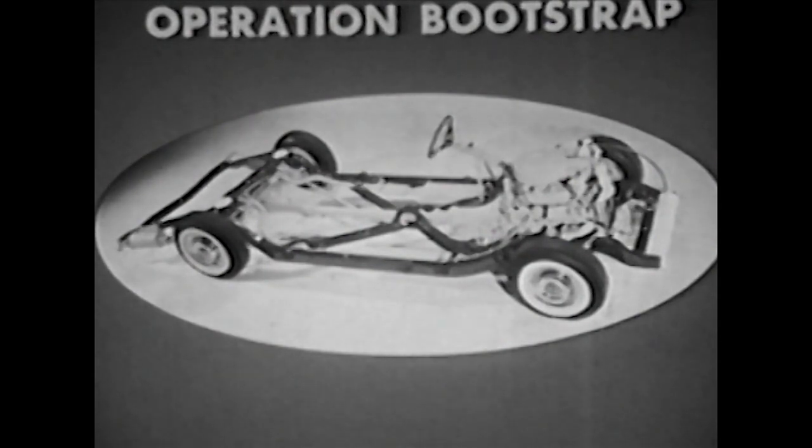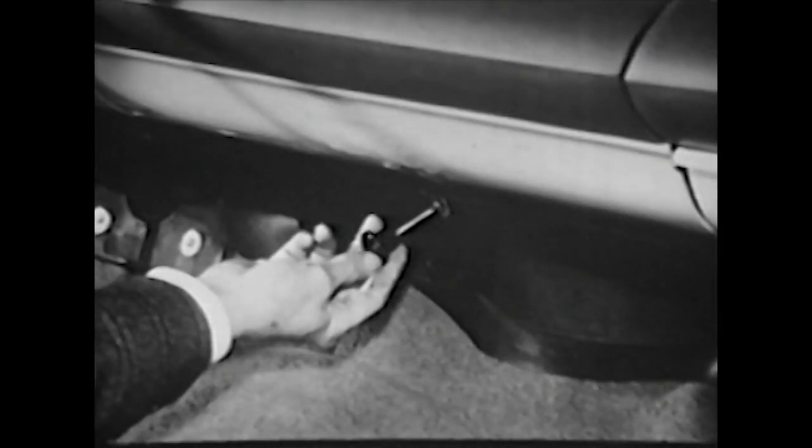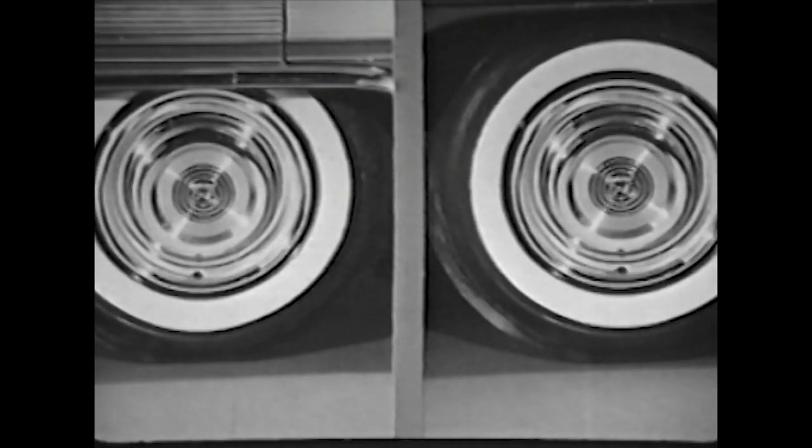Operation bootstrap is the third big feature of Buick's air poised suspension. When the driver pulls this lever, another miracle happens. The system's normal control valves are locked out and air is sent direct to all four air chambers, so the car frame rises nearly five inches, practically lifting itself by its bootstraps.